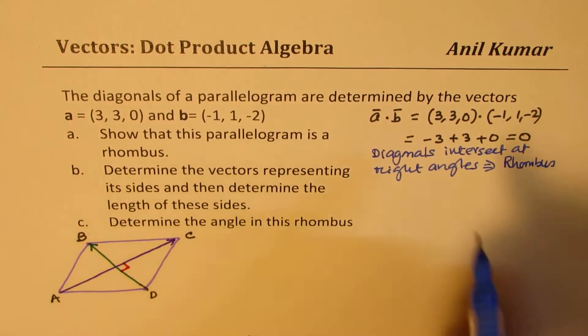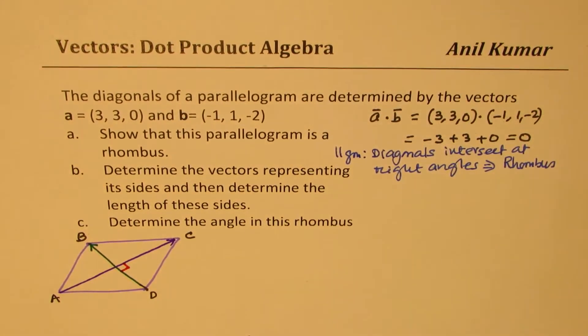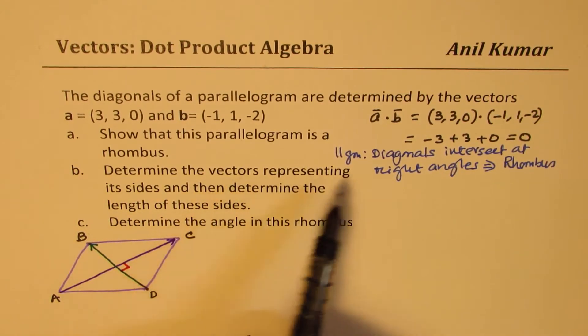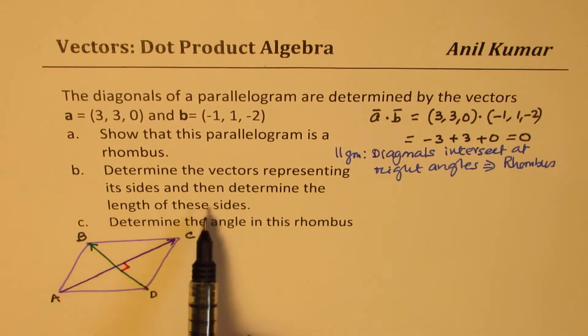And we are given it's a parallelogram. So it's a parallelogram in which the diagonals intersect at right angles and therefore it is a rhombus. So this part is done. Second, determine the vectors representing its sides and then determine the length of these sides.